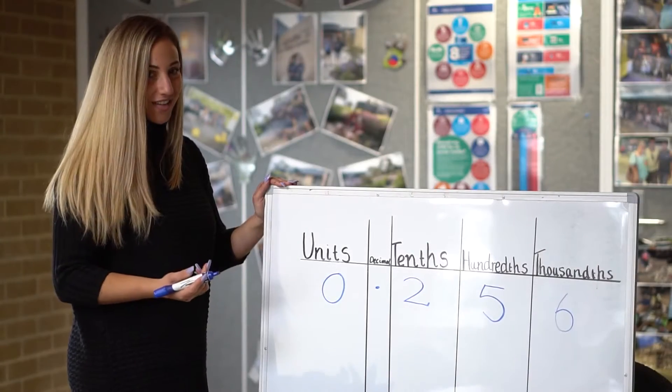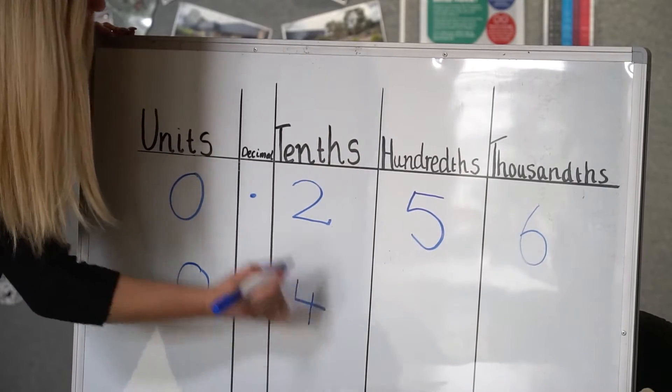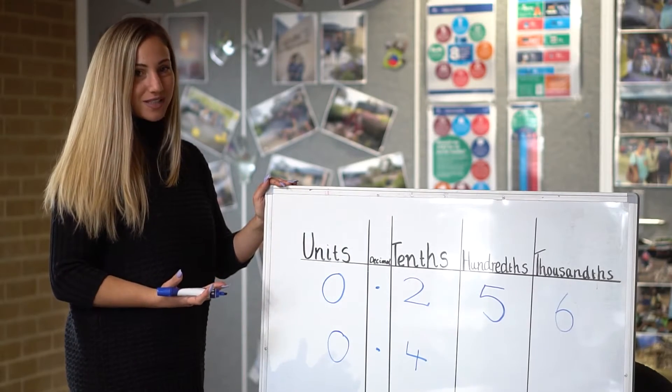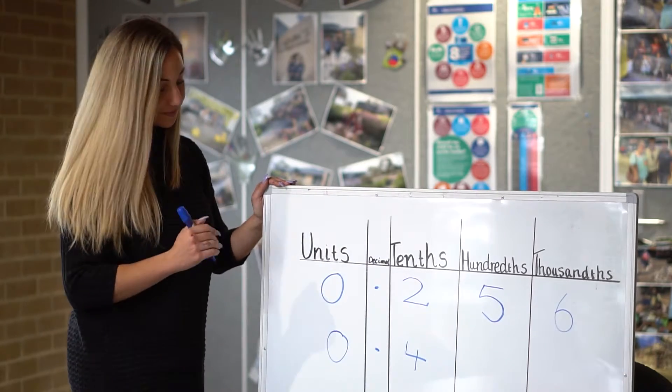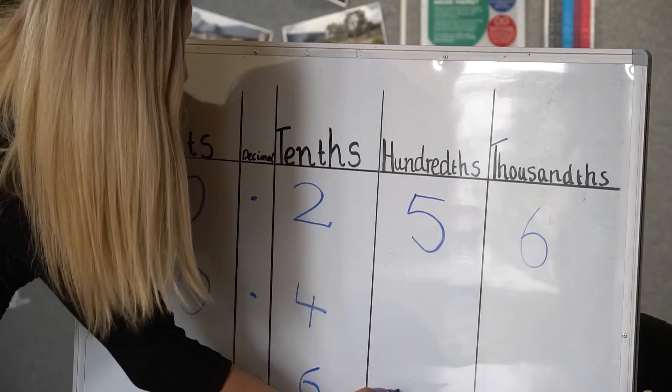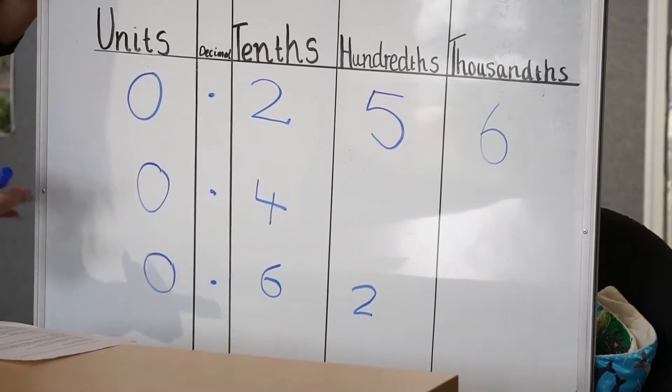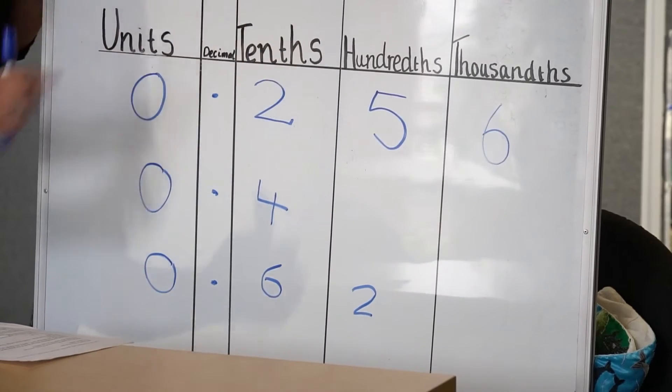Let's add another decimal below. The correct vocabulary to say this decimal would be four tenths. This number here, the correct vocabulary would be sixty-two hundredths.